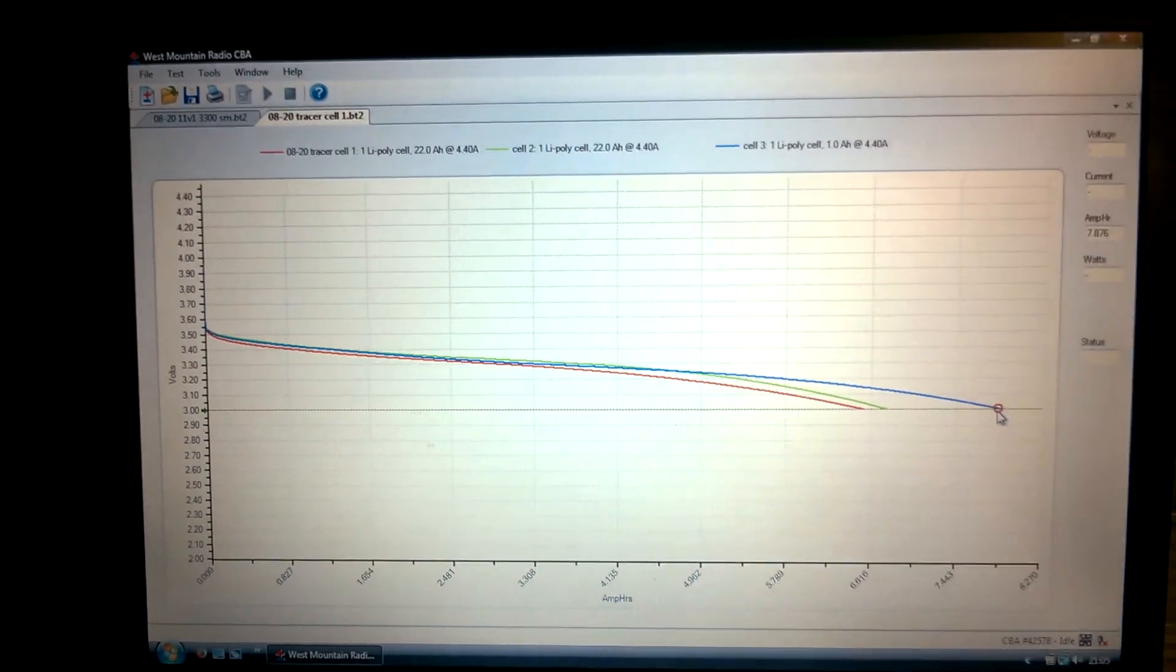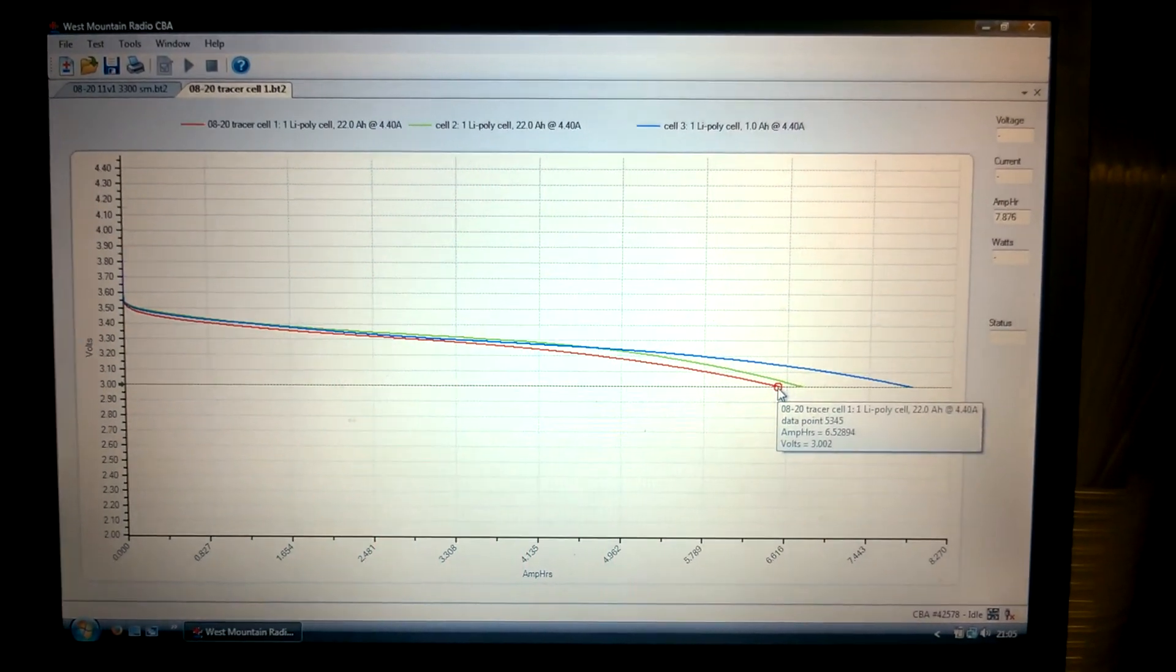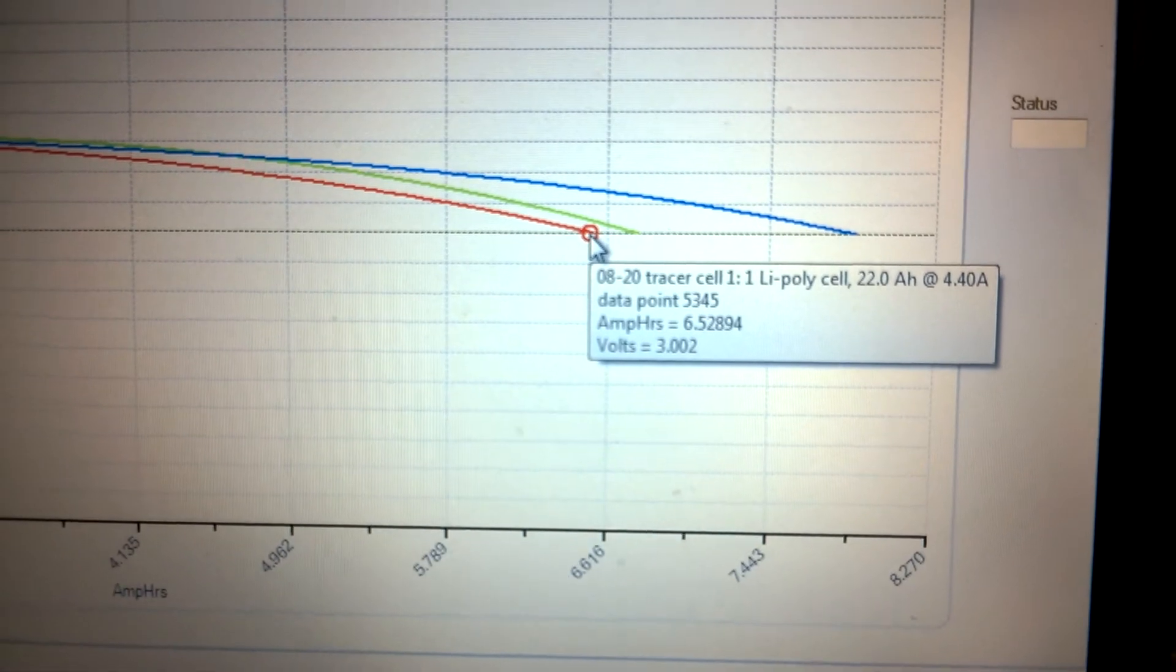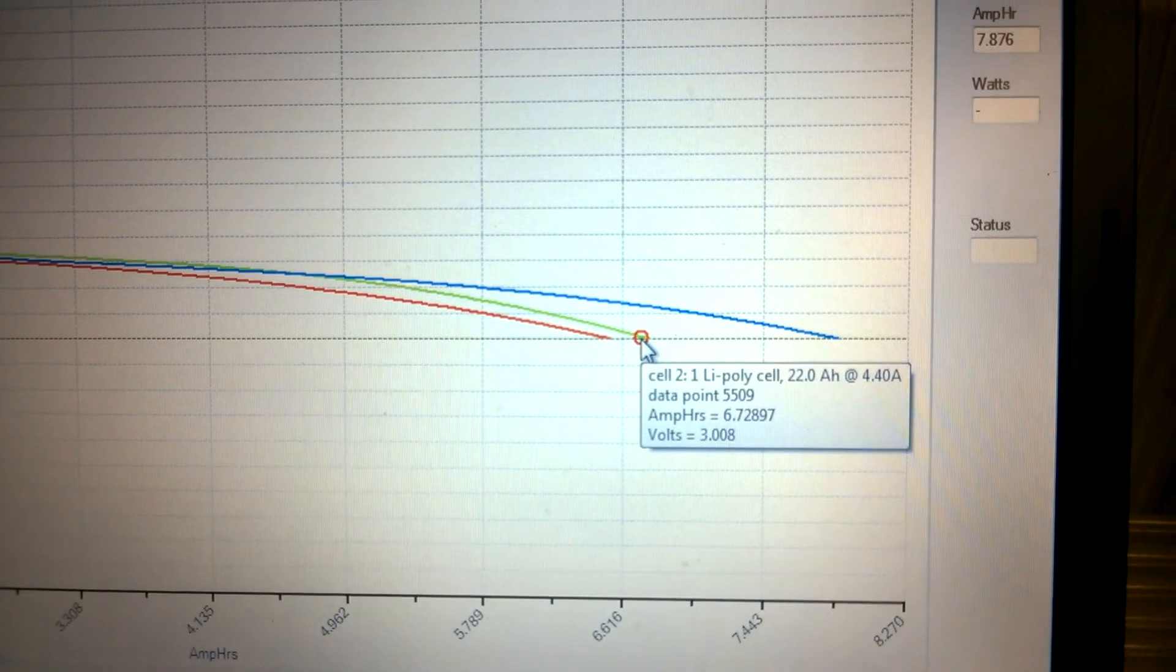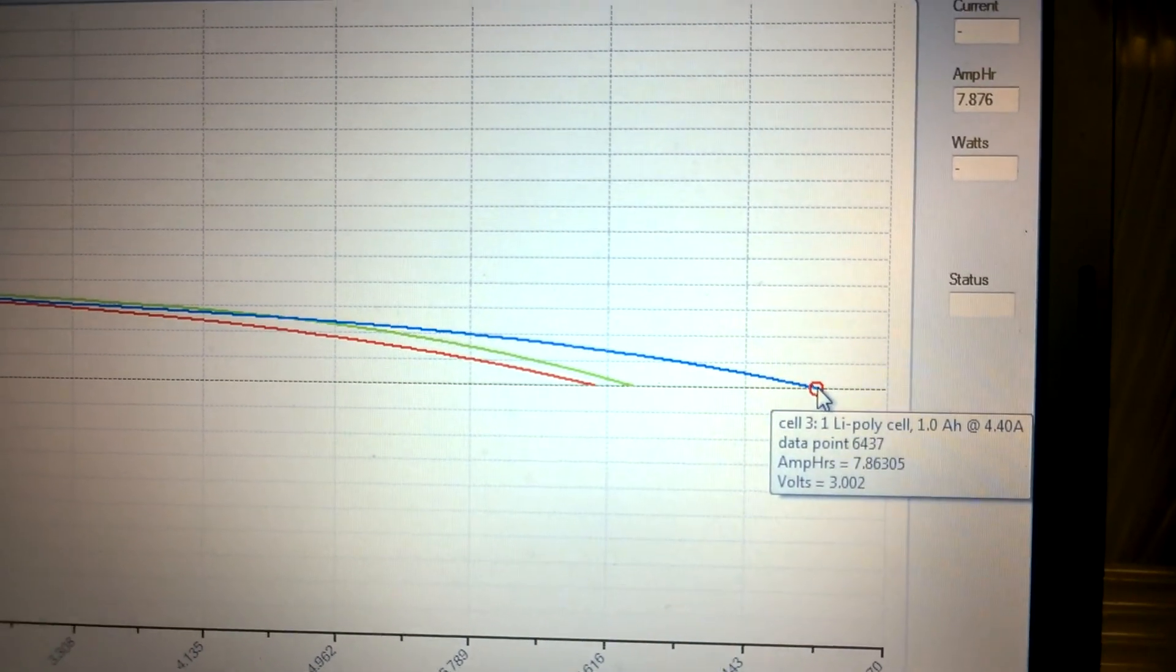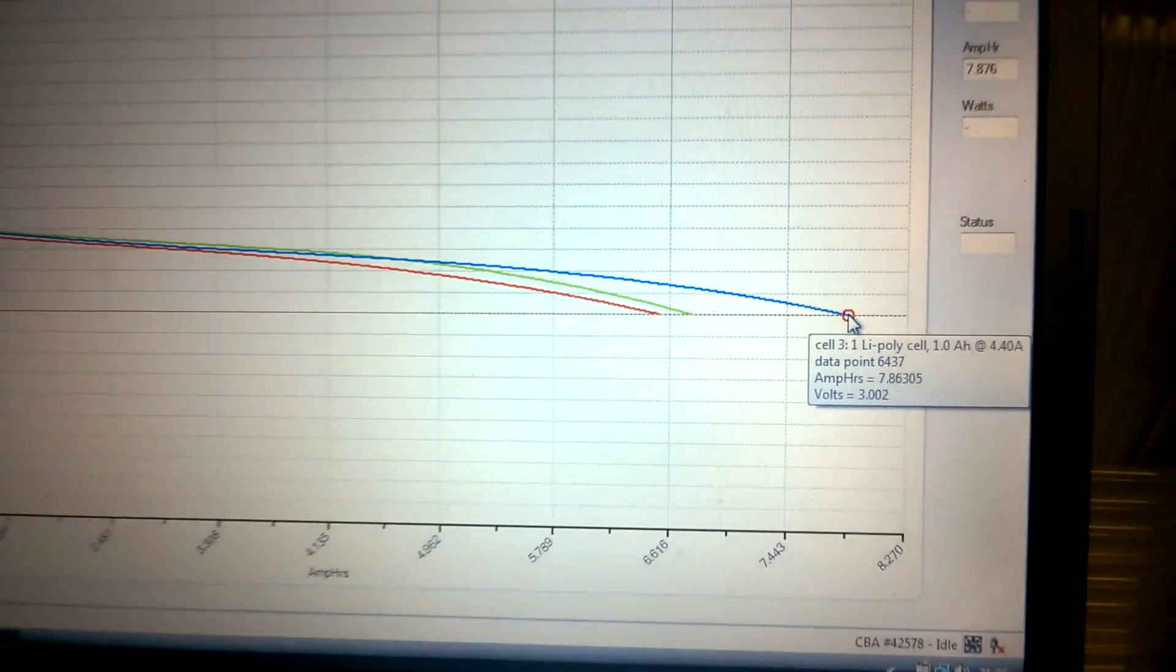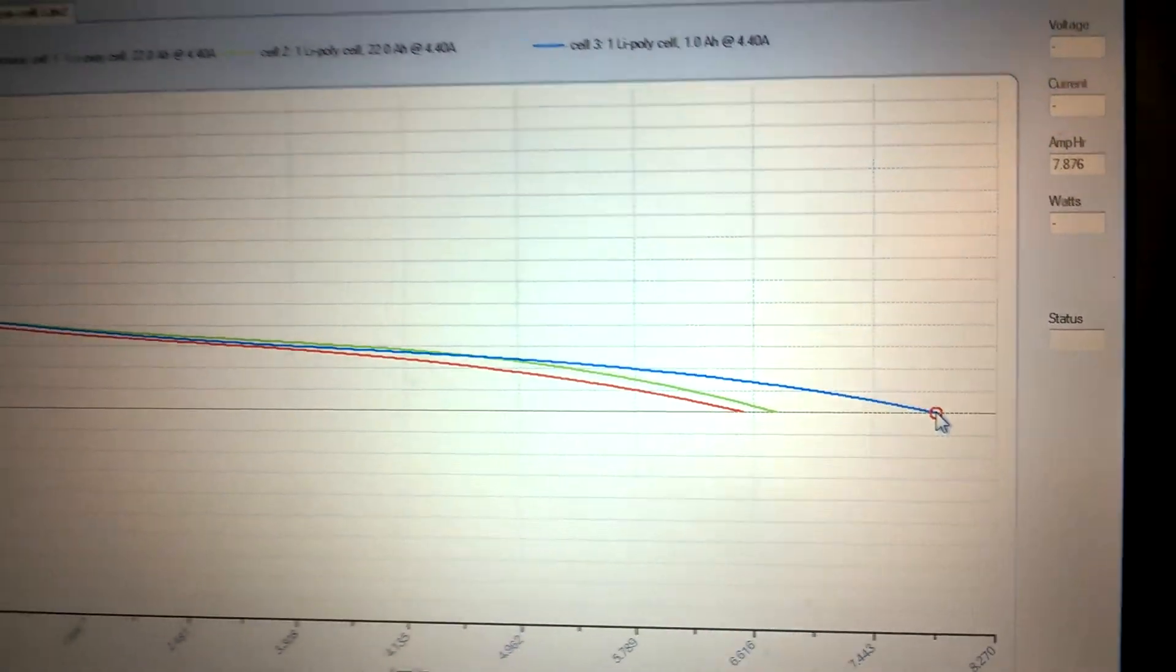Those are the results of the three cells. Rather disappointing. Let's get down to one of them. 6.1. Let's get a bit closer. What's that say? 6.5 amp hours. Well, it should be about 22. Let's say again, what's that say? 6.7. The last one, 7.3 or 7.8. But it should be 22.